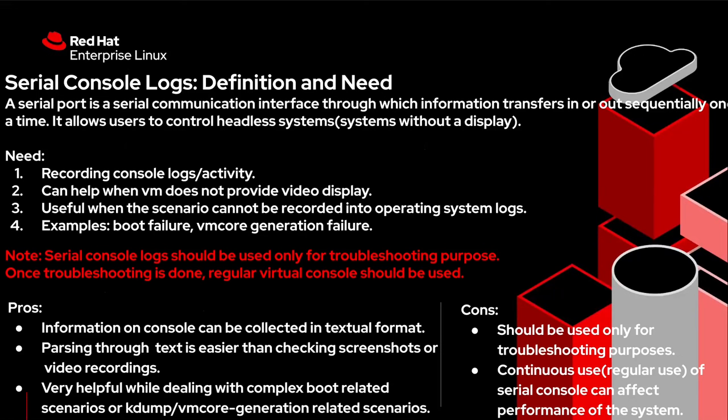Now let's discuss some advantages and disadvantages of serial console logs. The biggest advantage is that information on the console can be collected in a textual format. Parsing through text is easier than checking screenshots or video recordings, making serial console logs very helpful for complex boot-related or VM core generation scenarios. The only disadvantage is that continuous use of serial console can affect system performance, so serial console logs should be used only for troubleshooting purposes.